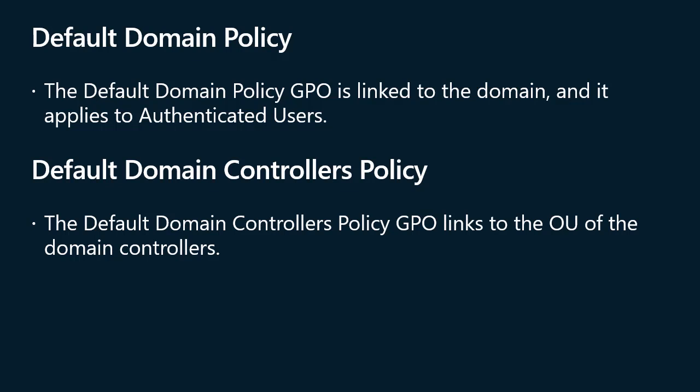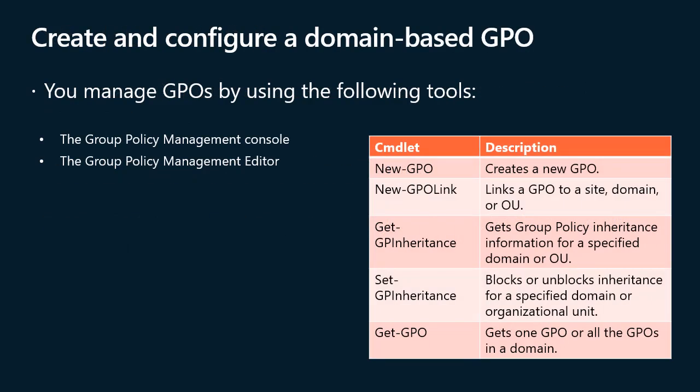You shouldn't add unrelated policy settings to the Default Domain Policy GPO. If you need to configure other settings to apply broadly in your domain, create additional GPOs that link to the domain. The Default Domain Controllers Policy GPO links to the OU of the domain controllers. Because computer accounts for domain controllers are kept exclusively in the domain controllers OU, this GPO affects only domain controllers. You should modify GPOs linked to the domain controllers OU to implement your auditing policies and to assign user rights required on domain controllers.